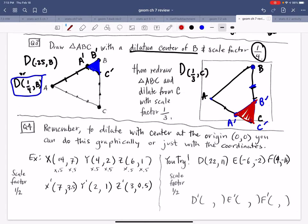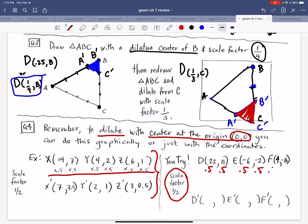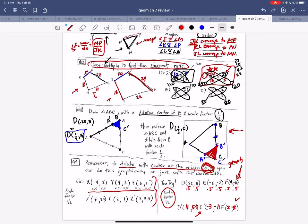Question four, they are saying dilate with a center. If you know that you're dilating from a center of (0,0), then you can do this just with the coordinates. If our scale factor is 1/2, we can just multiply each by 1/2. Half of 22, half of 11, half of -6, half of -2, half of 4, and half of 16. You can graph this, but you don't have to because now this one I'm dilating from the origin.